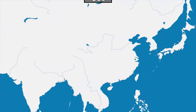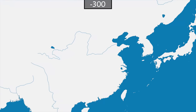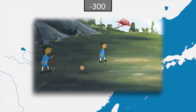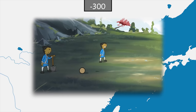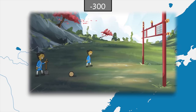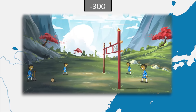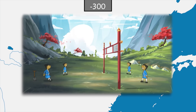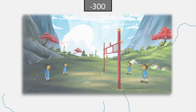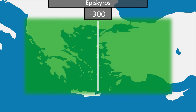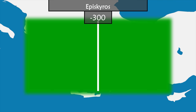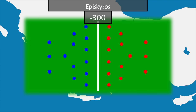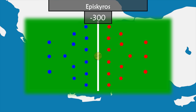We start around the third century BC in China, where cuju is played — one of the oldest known ball games. Two teams compete around a ball filled with feathers that must be sent into a net without using the hands. In ancient Greece, episkyros, another ball sport, is played between two teams of 12 to 14 players.